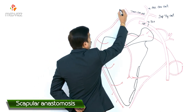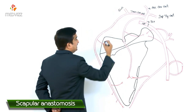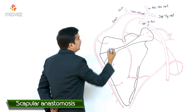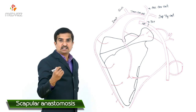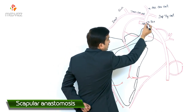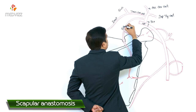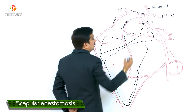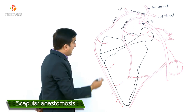The two branches of the transverse cervical artery are: one is the superficial branch of the transverse cervical artery, and another is the deep branch of the transverse cervical artery. The same thyrocervical trunk also gives off another branch called the suprascapular artery.